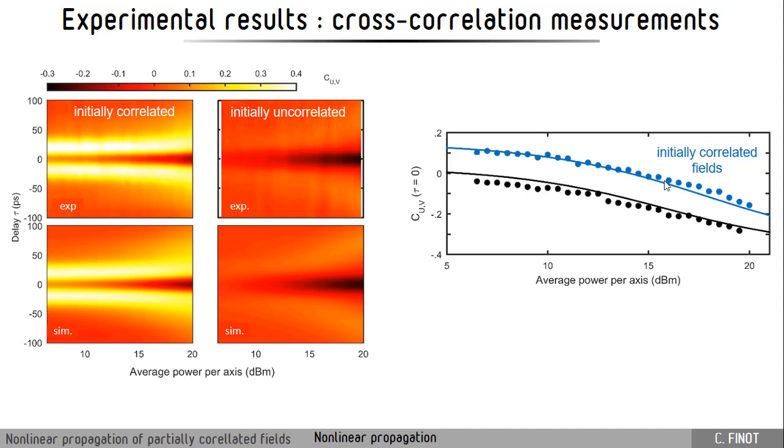Now regarding the cross-correlations, what we see is that when we change the power into the fiber there will be an influence on the level that we have at the center of this cross-correlation, and the central cross-correlation will decrease. So we retrieve the conclusions of the Nature Photonics paper by Fatome. What we see is that we do not have very strong difference between the initially correlated or initially uncorrelated fields - in both cases we have the same trend with this dip that appears at the center.